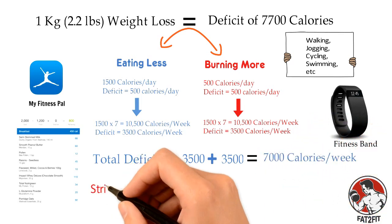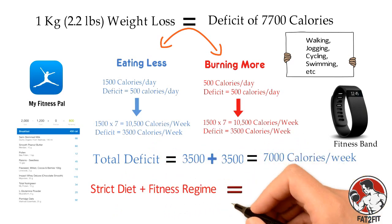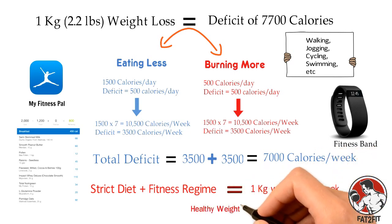By this strategy of strict dietary routine and fitness regime, you can lose 1-2 pounds of body weight in about 7-8 days. This is a healthy rate of weight loss.